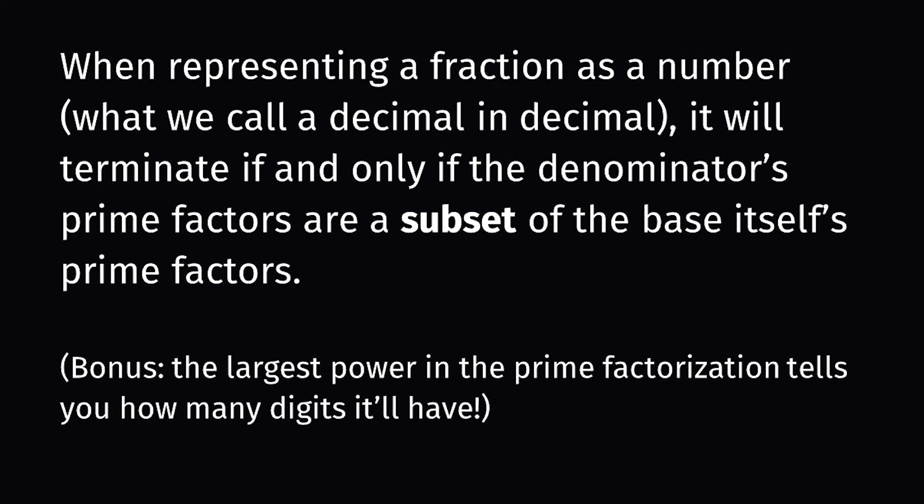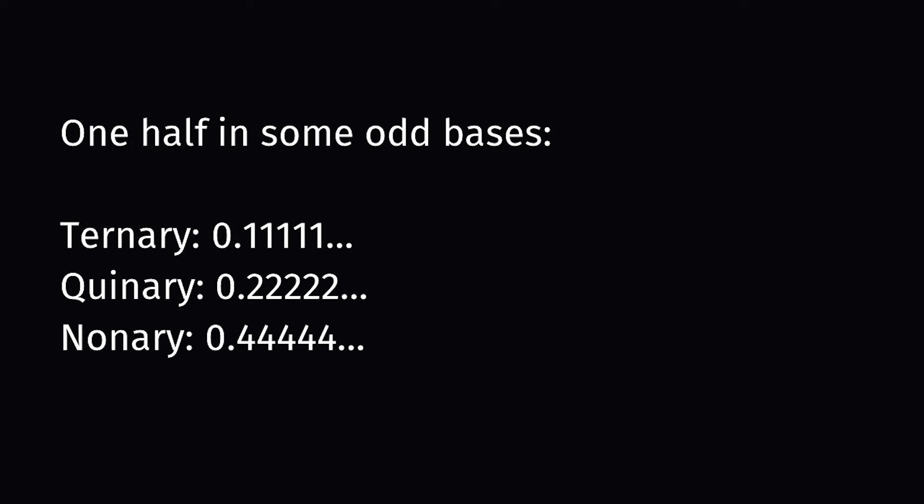In general, representations of fractions will only terminate if the prime factors of the denominator of the fraction, when reduced to lowest terms, is a subset of the base itself's prime factors. And by definition, 2 will never be a factor of an odd number. So in any odd base, halves have a repeating digit. It'll always only be one digit, which isn't too bad, but if you forget to write the bar over it, then suddenly you've written a completely different number. That's not good.